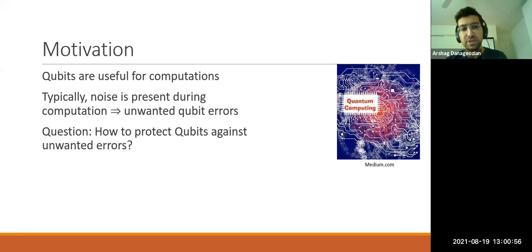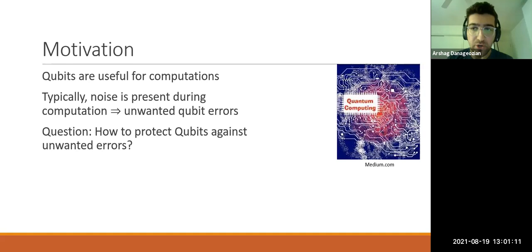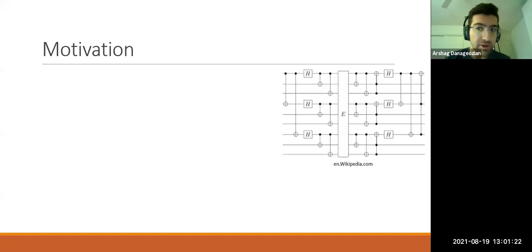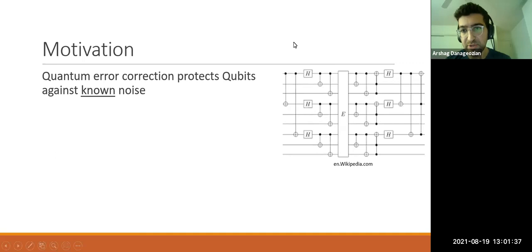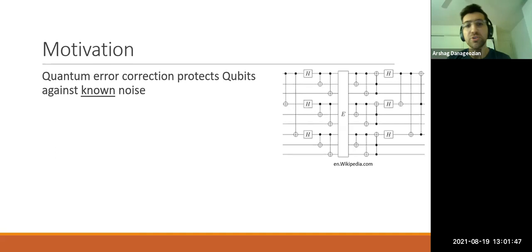All of us know that qubits are used for computations, and we also know that typically there is noise associated with any computation, and that noise can lead to unwanted errors in the qubits. A pretty simple question to ask is: how do you protect the qubits against such unwanted errors? One way to answer this is through quantum error correction, which protects qubits against known sources of noise. On the right-hand side you can see a simple scheme - this is the Shor code, one of the most well-known codes in error correction.